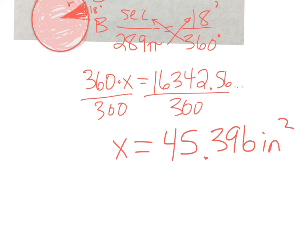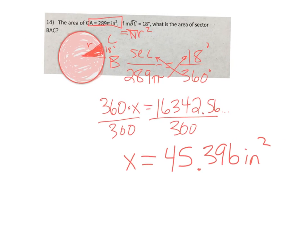So we take the given area, multiply it by the angle, and divide that by 360, and that tells us the area of that tiny 18-degree sector.